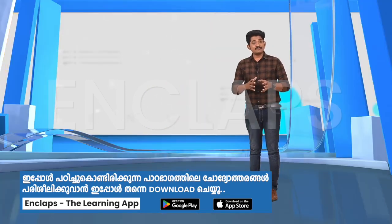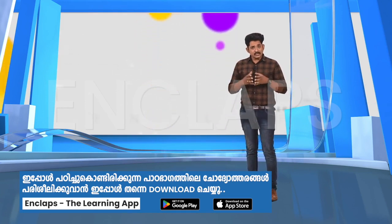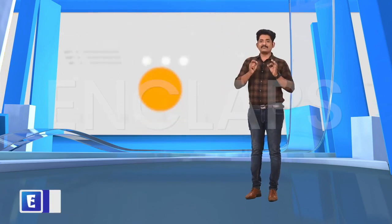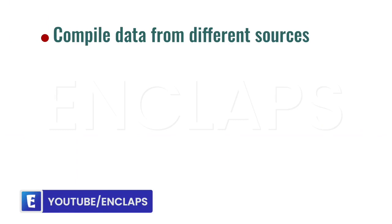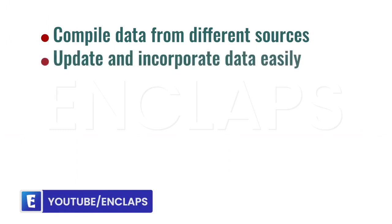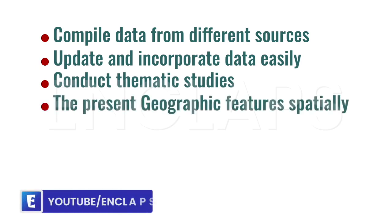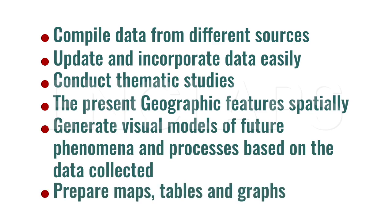Network analysis may also help to bring an accident victim to a suitable hospital through less congested roads. By using geographical information system, we can compile data gathered from different sources, update and incorporate data easily, conduct thematic studies, and present geographic features spatially. GIS can also generate visual models of features, phenomena, and processes based on collected data, and prepare maps, tables, and graphs.